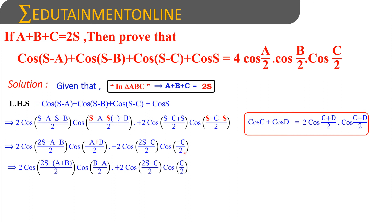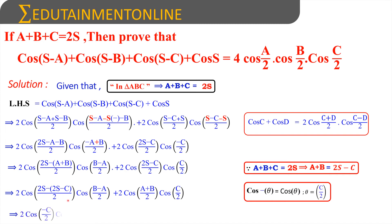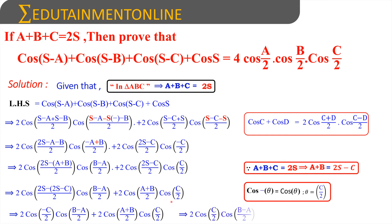Here cos(-c/2) can be written as cos(c/2) because cos(-θ) = cos(θ). Now, since a + b + c = 2s, we have a + b = 2s - c, so 2s - a - b = c. Substituting, the expression becomes 2·cos(c/2)·cos((b - a)/2) + 2·cos((a + b)/2)·cos(c/2).